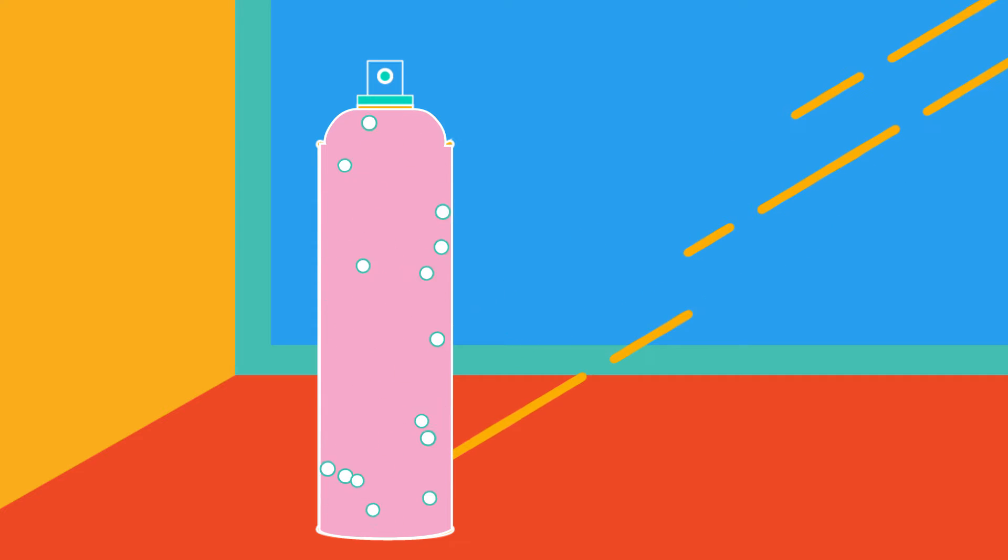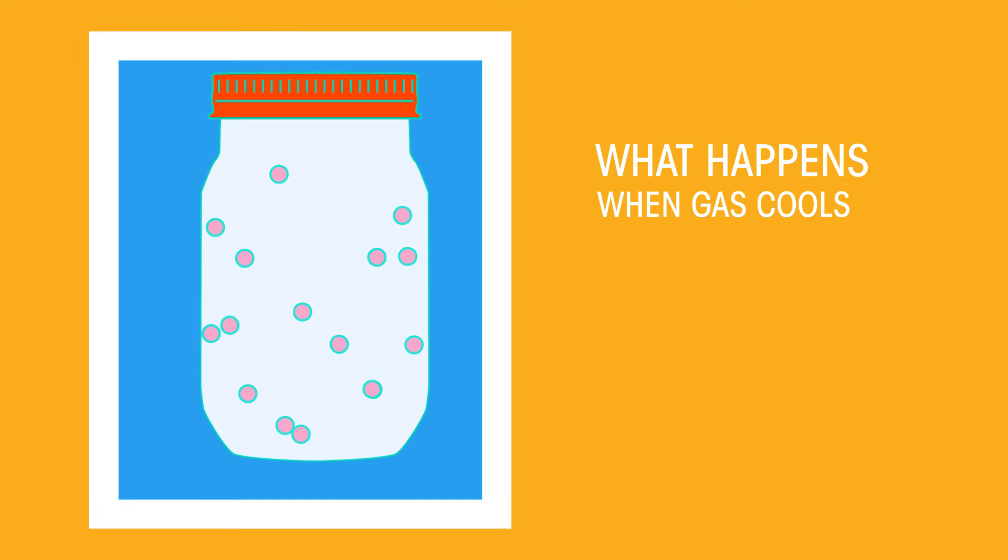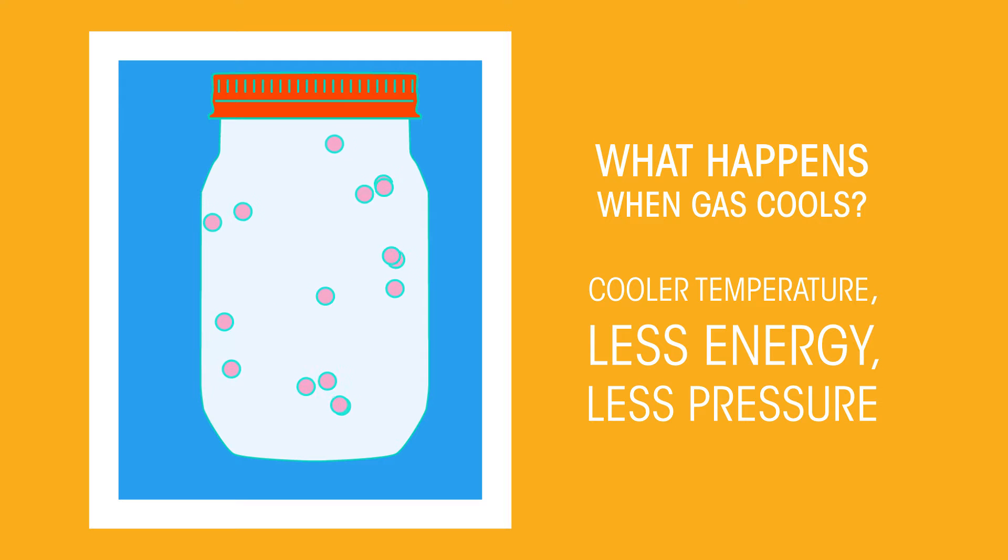So what happens if we then cool down the gas? This time the particles have less energy, and so less pressure is being exerted on the container, which is why balloons shrink and become sad and saggy.